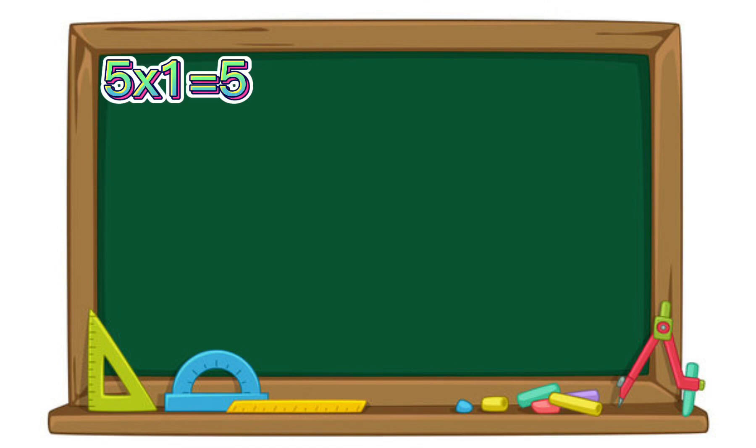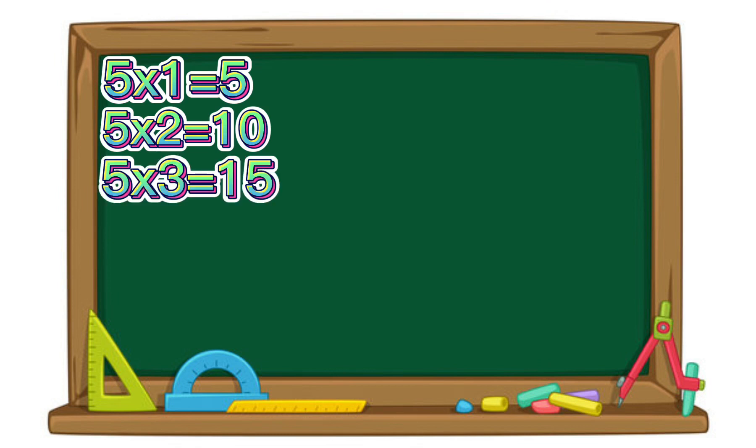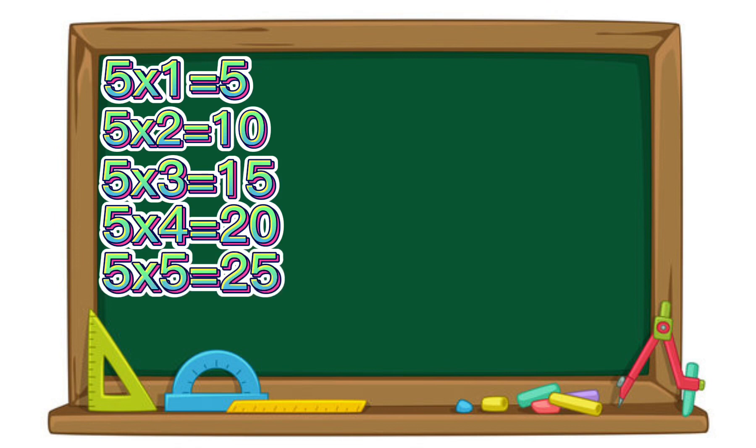5 times 1 equals 5. 5 times 2 equals 10. 5 times 3 equals 15. 5 times 4 equals 20. 5 times 5 equals 25. 5 x 6 equals 30.